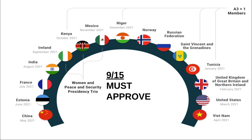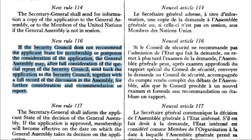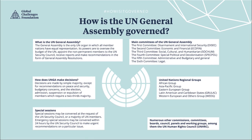If it passes the Security Council, it goes to the General Assembly. According to the UN, if the Security Council does not recommend the applicant state for membership or postpones the consideration of the application, the General Assembly may, after full consideration of the special report of the Security Council, send the application back to the Council together with the full record of the discussion in the Assembly for further recommendation or report. At least a two-thirds majority in the General Assembly must approve the state's acceptance into the UN.